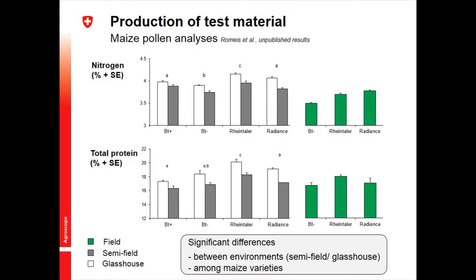We need those conventional varieties as a sort of baseline. How you select those baseline comparators and how you compare them with your BT/non-BT pair matters enormously, because the interpretation of your data totally depends on which comparator lines you choose. If you choose two varieties that are very distinct from each other, your BT maize effect may look negligible; choose two very similar ones, and all of a sudden your BT maize effect becomes relevant.